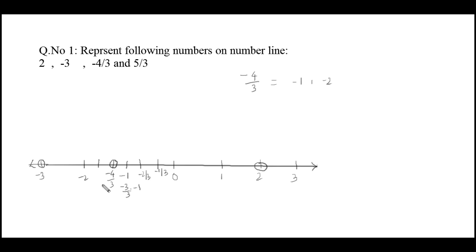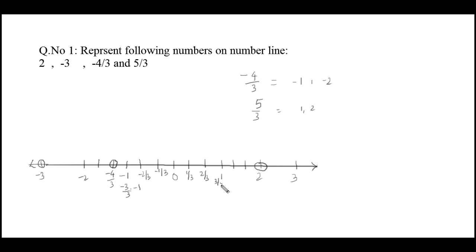The next question is the representation of 5/3 on the number line. As it is a positive number, it will be on the right-hand side of 0, and its value lies between 1 and 2. Since the denominator is 3, divide into 3 equal parts. The values are 1/3, 2/3, 3/3 (which equals 1), 4/3, and 5/3. Circle over 5/3 — this is the representation of 5/3 on the number line.